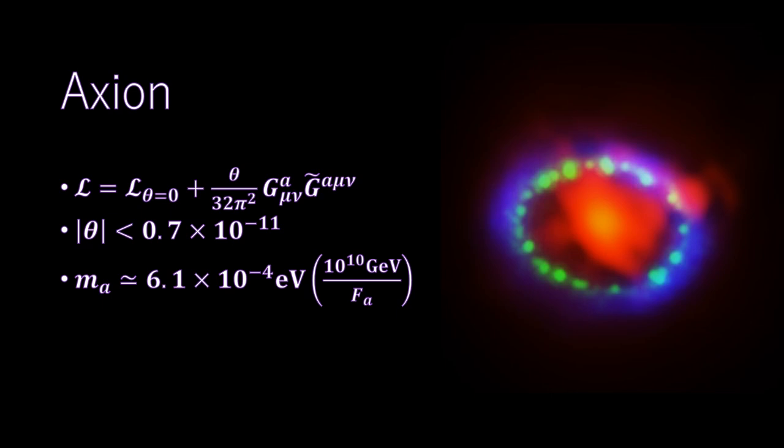Axion gains mass M through the instanton effect of the QCD. The existence of the axion has not yet been verified experimentally, but the mass of the axion is severely constrained by ground experiments and the analysis of astronomical phenomena. Since the strength of the interaction between the axion and other particles is proportional to the axion mass, the upper limit of M can be obtained. The most stringent restrictions are achieved by supernova SN 1987A.